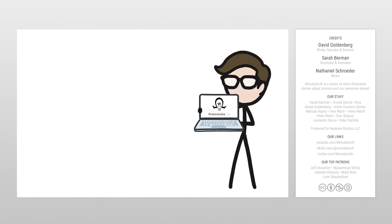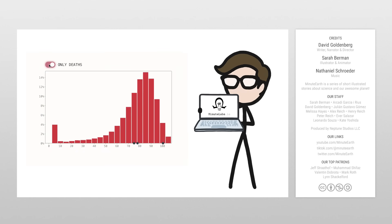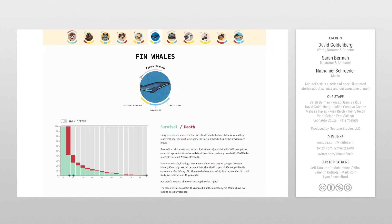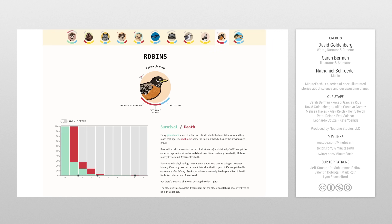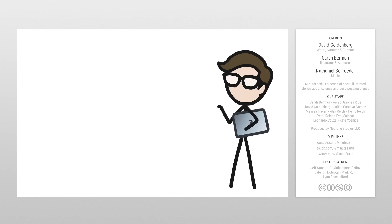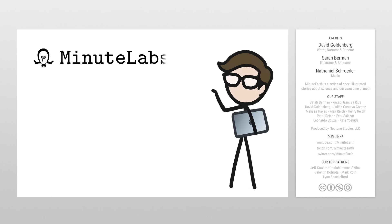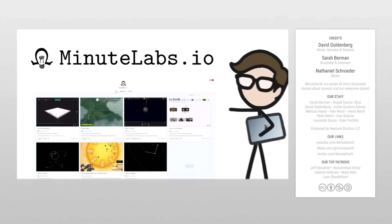I put together something to give everyone a bit more of a hands-on understanding of these different kinds of life expectancies and survival curves. The lab also has a bunch of animals that we didn't have time for in the video, like cats, whales, robins, and so on. To see it, just click the link down below, or you can go to minutelabs.io and find the survival curves lab, along with a ton of other fun interactives.